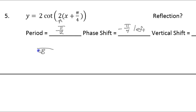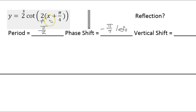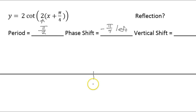Whenever there's a phase shift, I recommend that you start your graph at the phase shift. For tangent and cotangent, these are the two graphs that we need two periods — one to the right and one to the left. So I'm going to start right in the center, in the middle of my graph at the phase shift. I'll put a mark right in the middle and call it negative pi over 4. After that, I'm going to go four places to the right — one, two, three, four — that should be one period.